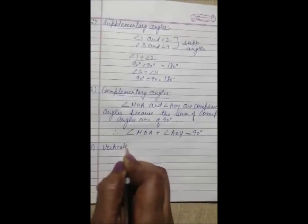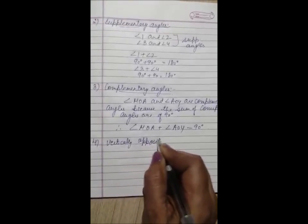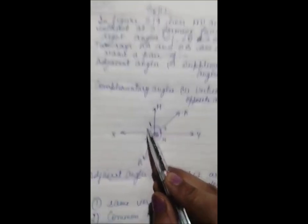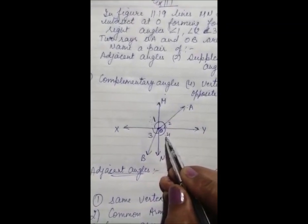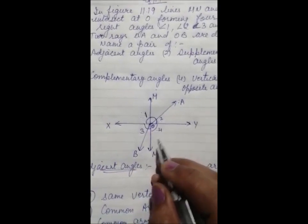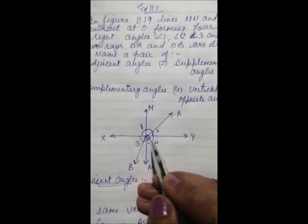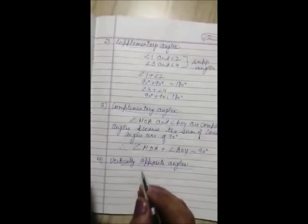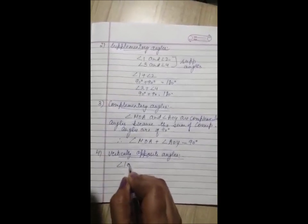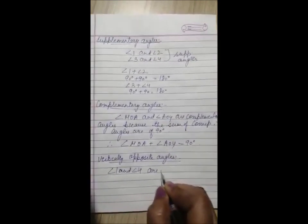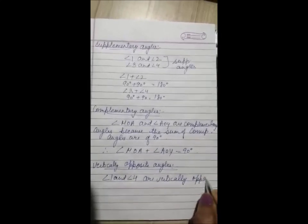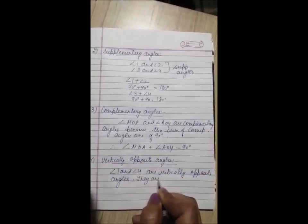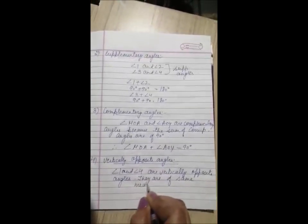Fourth is vertically opposite angles. In this figure, angle 1 and angle 4 are vertically opposite angles because they are of the same measure — both 90 degrees. Angle 1 and angle 4 are vertically opposite angles because they are of the same measure.